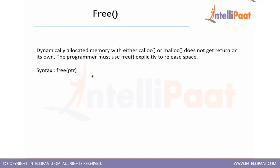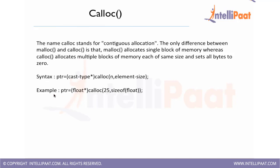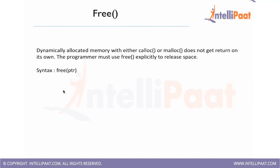Free — dynamically allocated memory with either calloc or malloc does not get freed on its own. The programmer must use free explicitly to release the space. Whatever memory we request from the system we should give it back to the system. The process of giving it back is calling free with the pointer. So whatever memory we want to free, just call free and pass the pointer which holds the memory location.